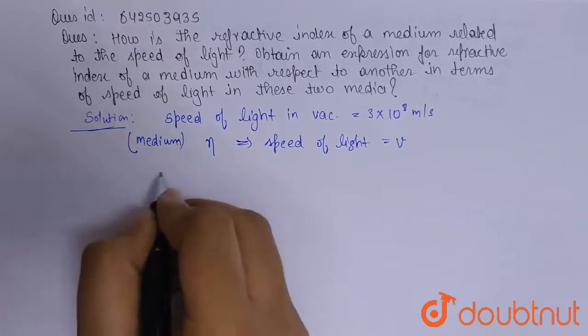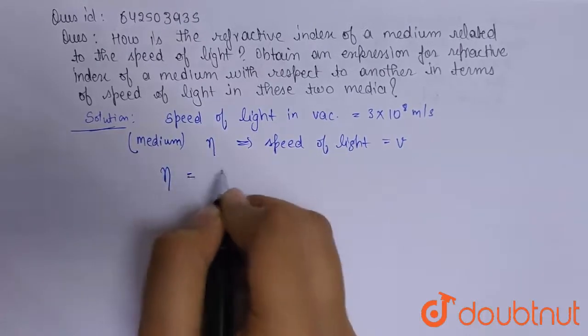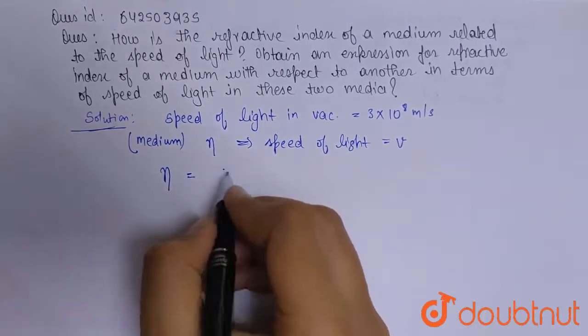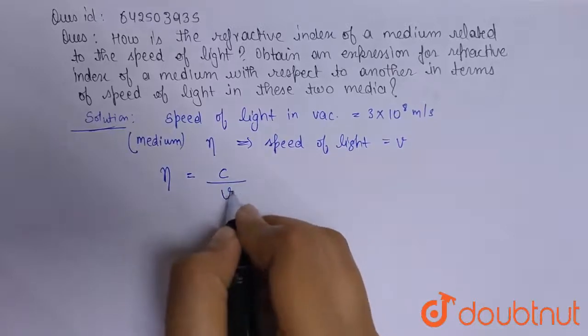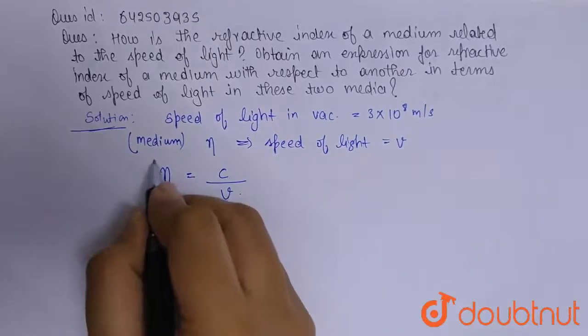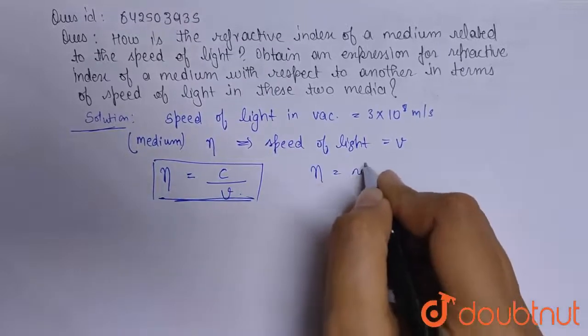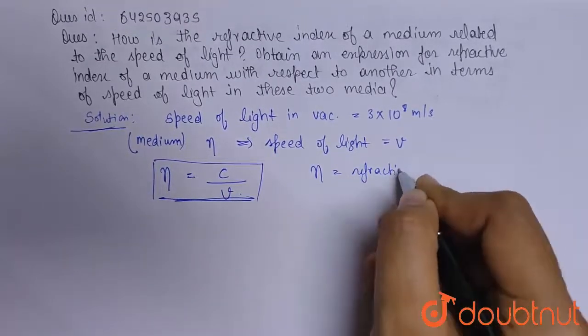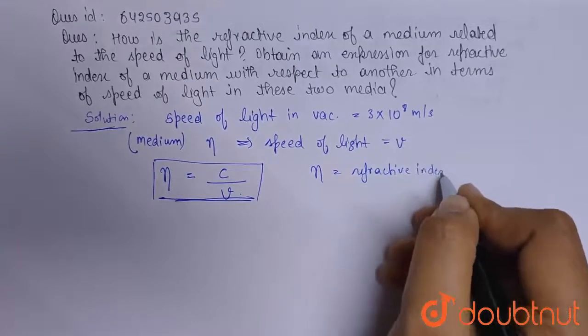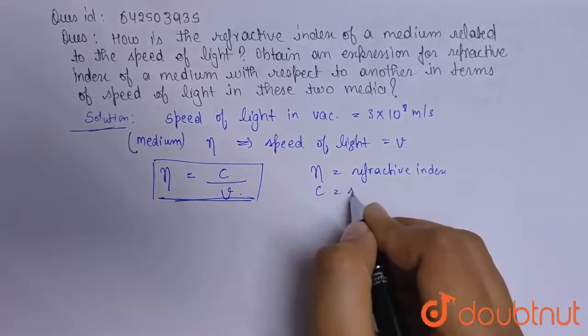the refractive index, that is n, as the speed of light in vacuum to the speed of light in the medium, where n is refractive index, c is the speed of light in vacuum